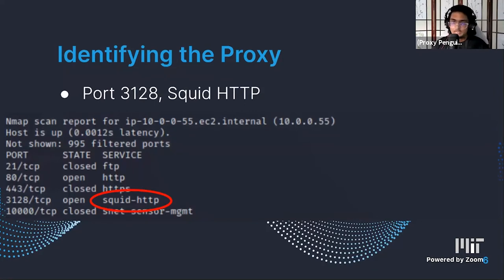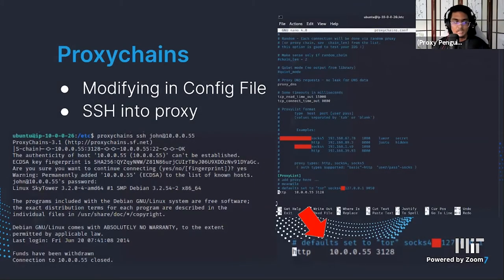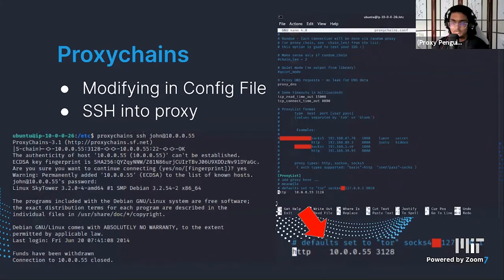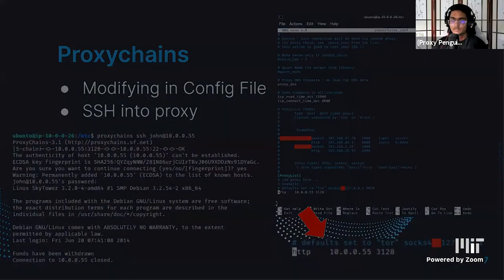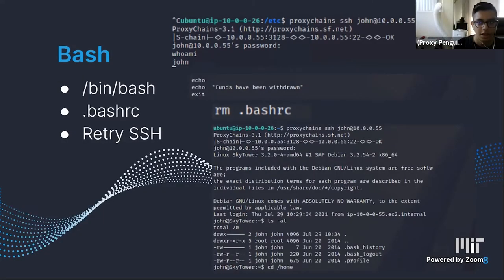Going back to an NMAP scan on 10.0.0.55, we saw on port 3128 there was a squid HTTP server — a proxy cache server that allows an individual to store information. We determined we had to sign on to that proxy server as John. To do that, we used proxy chains, a program that allows you to access different proxy servers. We ran 'proxychains ssh john@10.0.0.55,' logged in, and got a response saying 'funds have been withdrawn,' then the connection was closed.